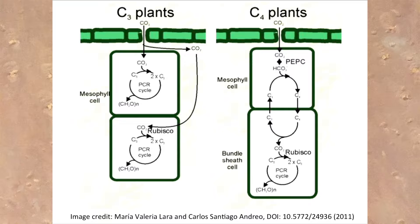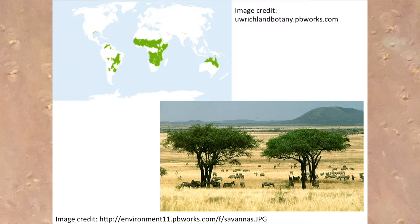The C4 pathway is most common in grasses, where it first appeared some 25 to 35 million years ago. By raising intracellular carbon dioxide levels, C4 plants eliminate a wasteful biochemical reaction called photorespiration that is most damaging to C3 plants at higher temperatures and lower carbon dioxide levels. This is one reason why C4 grasses are most abundant in warm, tropical and subtropical grasslands and savannas, as shown in the map here and in the picture.